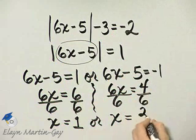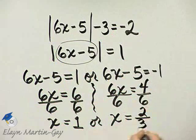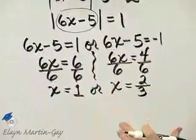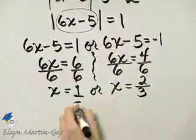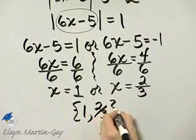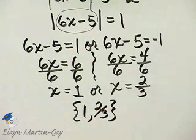4 divided by 2 is 2. 6 divided by 2 is 3. So, my solution set is the set containing 1 and also 2 thirds. Both of these are solutions to the original equation.